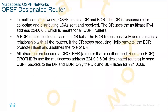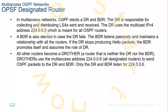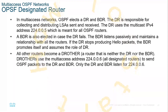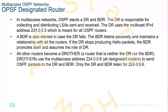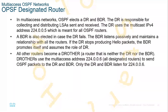If the designated router fails, a backup will kick in — hence the BDR. The BDR will listen passively. It will also maintain a record and a relationship with all routers and routes, so that if the DR does stop producing hello packets, the BDR can kick in immediately. If you are not a DR or a BDR, you will be known as a DR other — essentially a router classified as other than designated router.